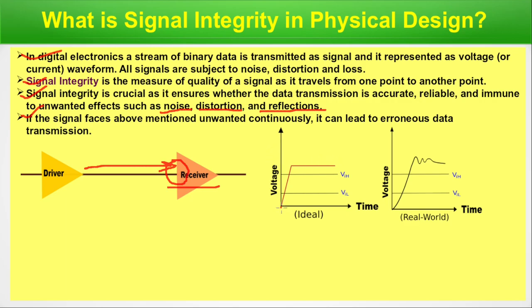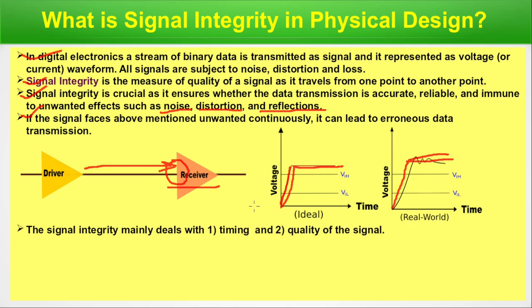In the real world, signals do not have the ideal waveform shape. Signal integrity is both an interconnect level problem as well as a system level problem. Issues like crosstalk and ohmic voltage drop come from the interconnect level. Any design has some signal integrity problems, but they generally do not interfere with the functionality of the system until the system deals with high-frequency signals. As we move to high-frequency operation, the problem becomes more severe.